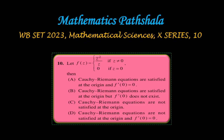Now let's look at another problem of complex analysis: question number 10 from the question booklet series X. The problem involves f(z) = z̄²/z if z ≠ 0, and f(0) = 0. We need to determine whether the Cauchy-Riemann equations are satisfied at the origin, and whether f'(0) exists.